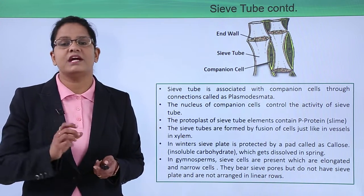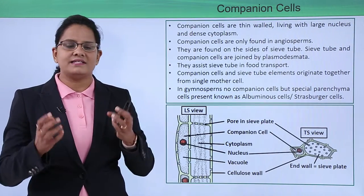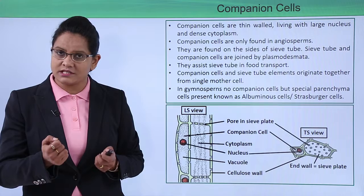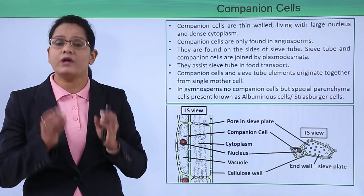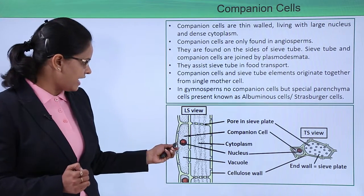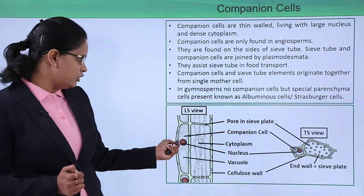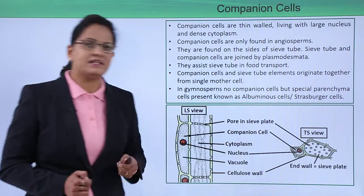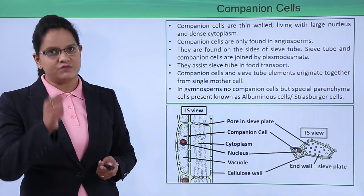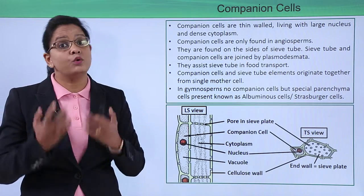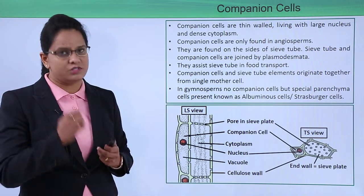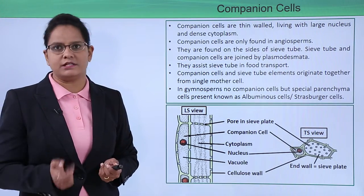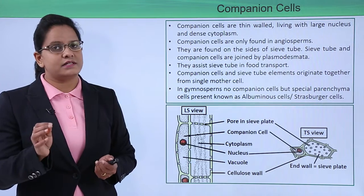Next are companion cells — they are living cells with a nucleus, so they are parenchymatous, thin-walled living cells with a large nucleus that controls the activity of the sieve tube. In the diagram, you can see the companion cell is closely stuck to the sieve tube element. In transverse section also, the sieve tube cell and companion cell are close to each other. Joined by plasmodesmata, companion cells assist the sieve tube in food transport.